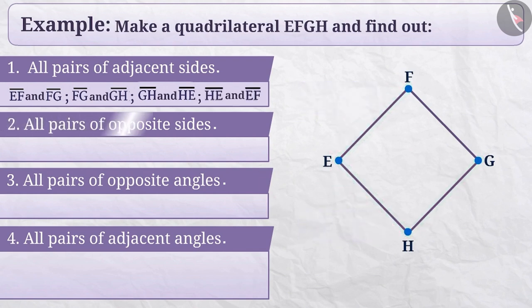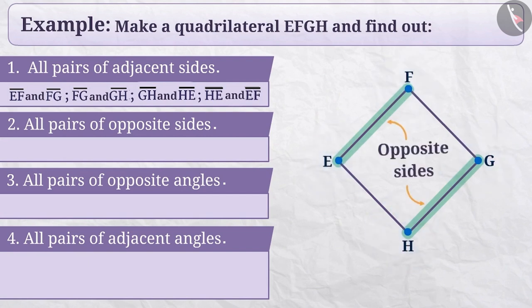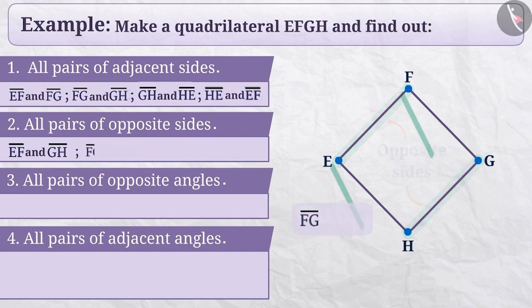Now, let us find out all the pairs of opposite sides. If there is no common vertex in any 2 sides of the quadrilateral, then such sides are called opposite sides. In the quadrilateral EFGH, the opposite sides are EF and GH, FG and HE.